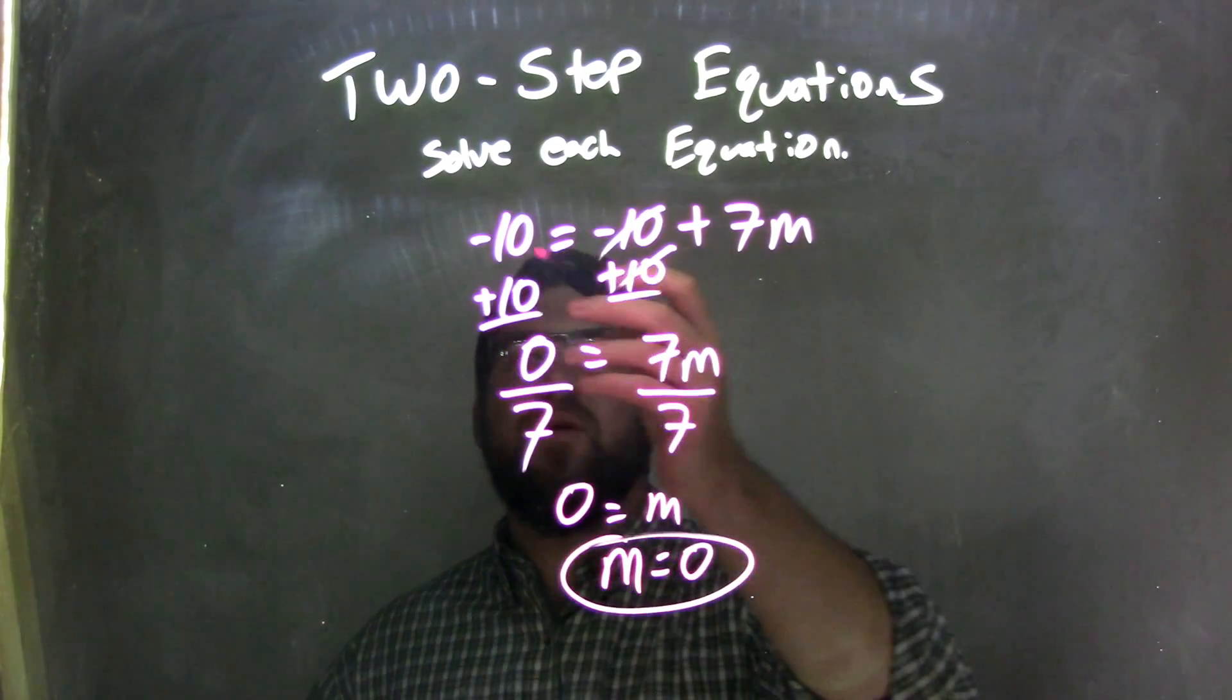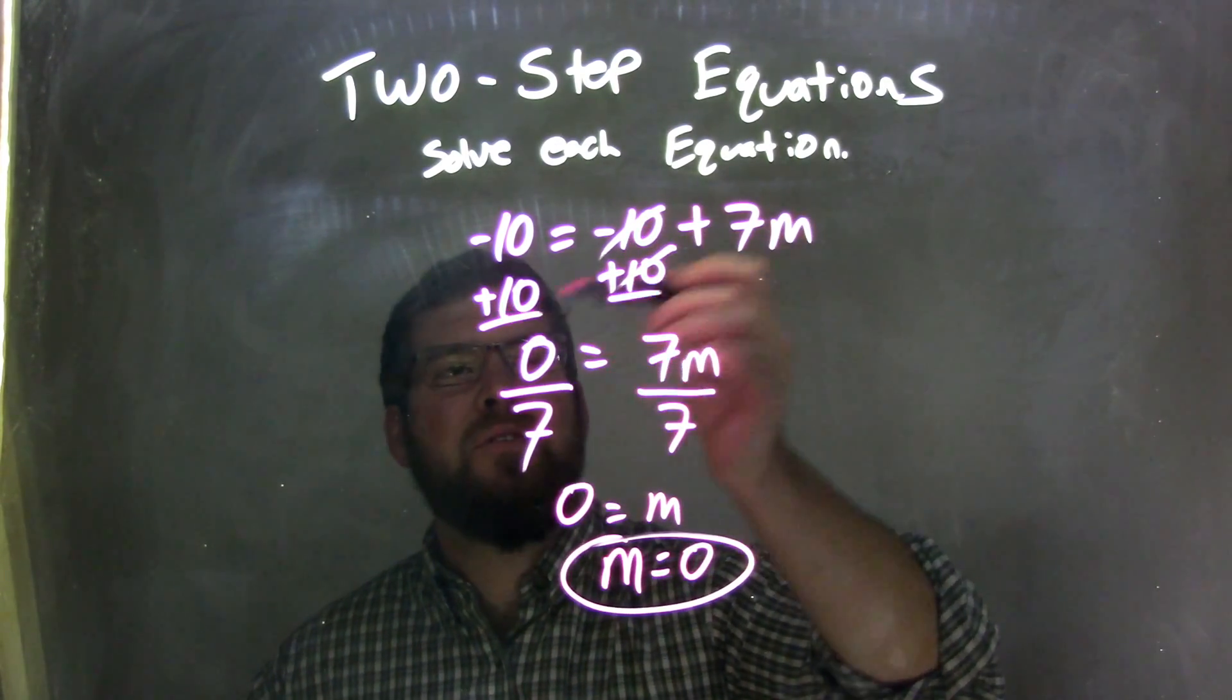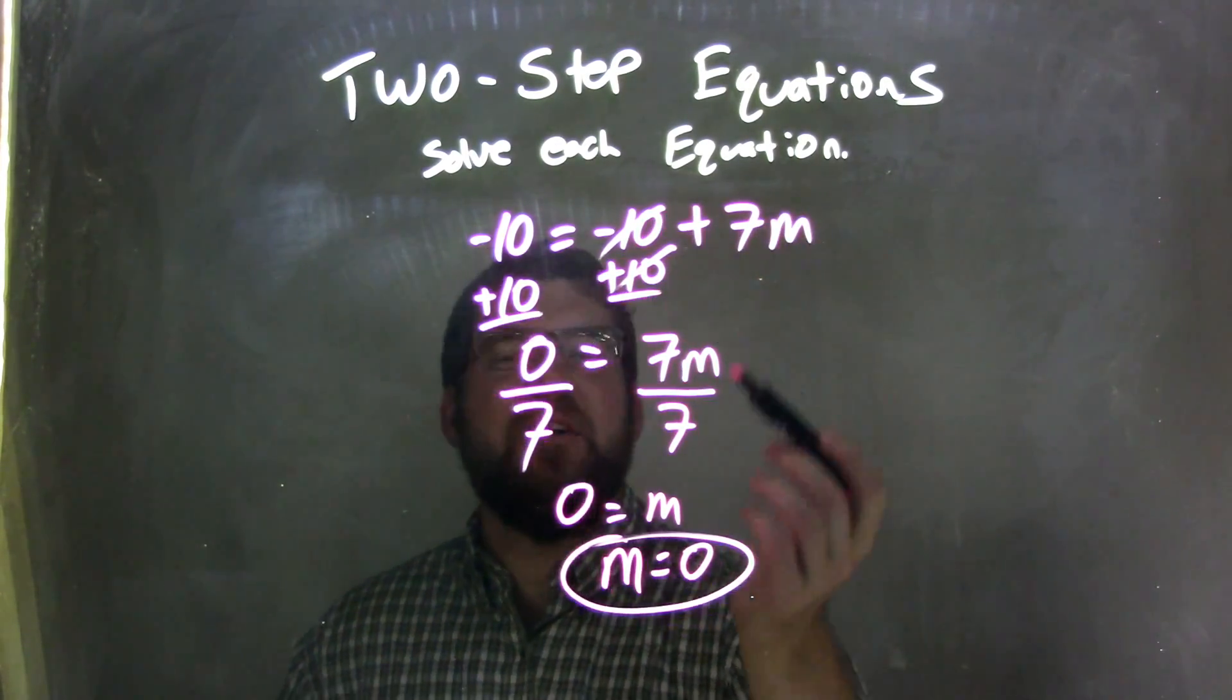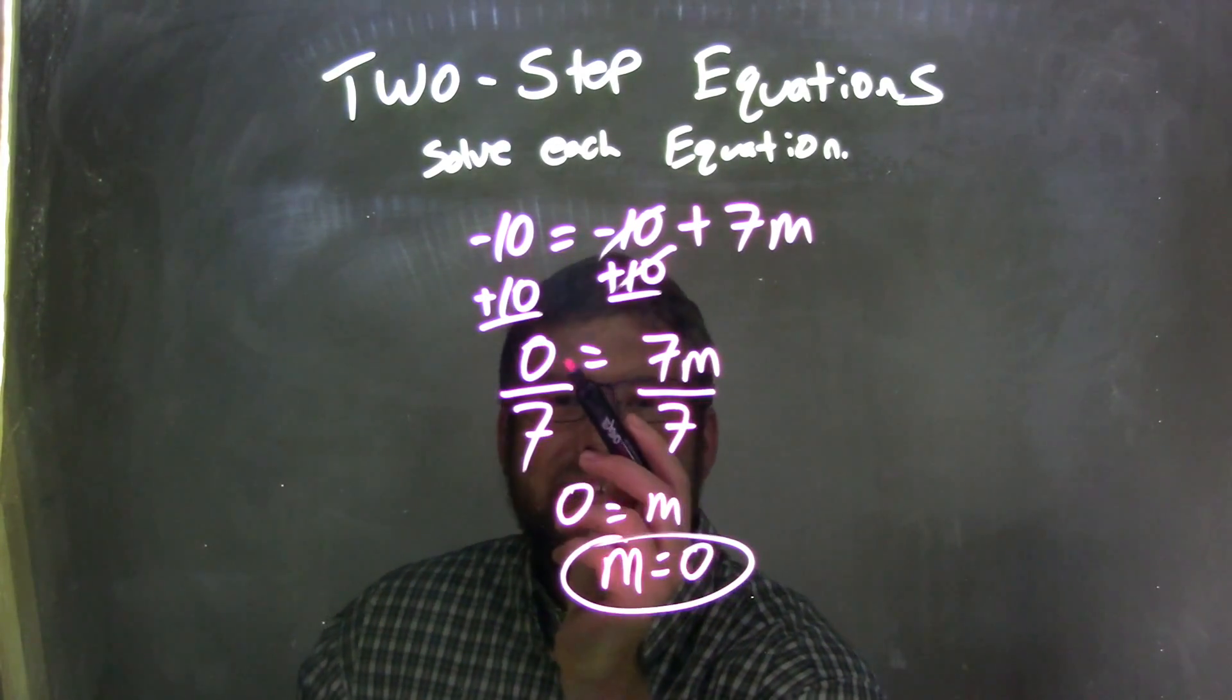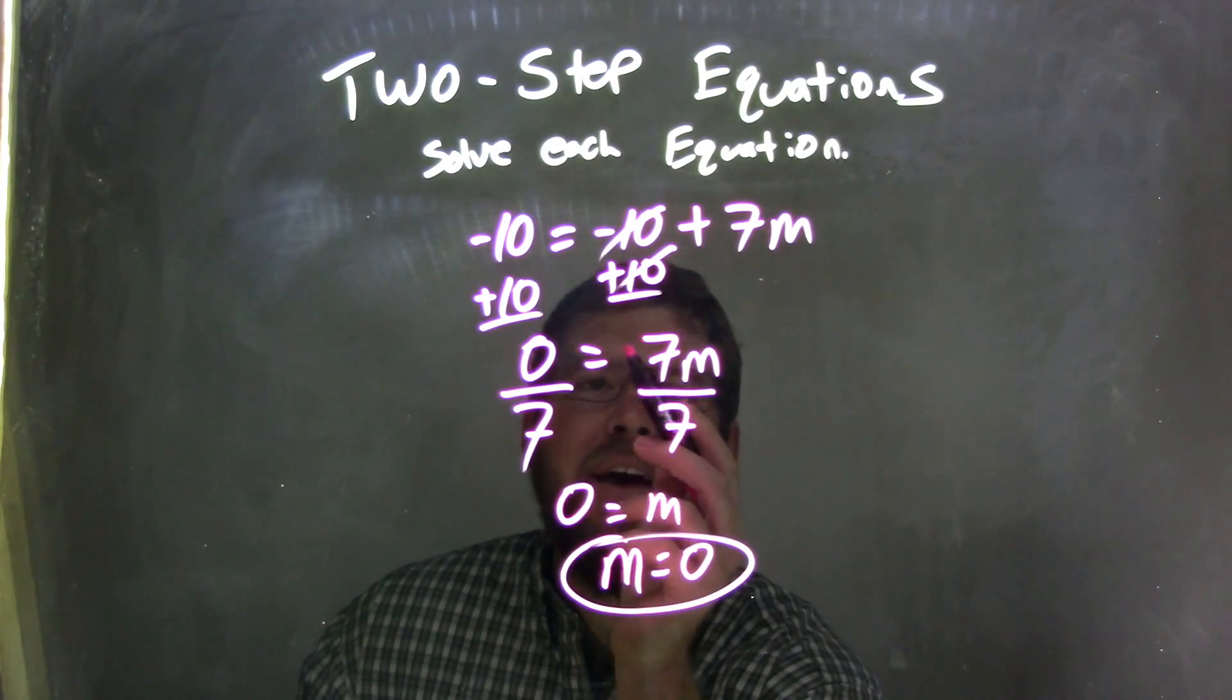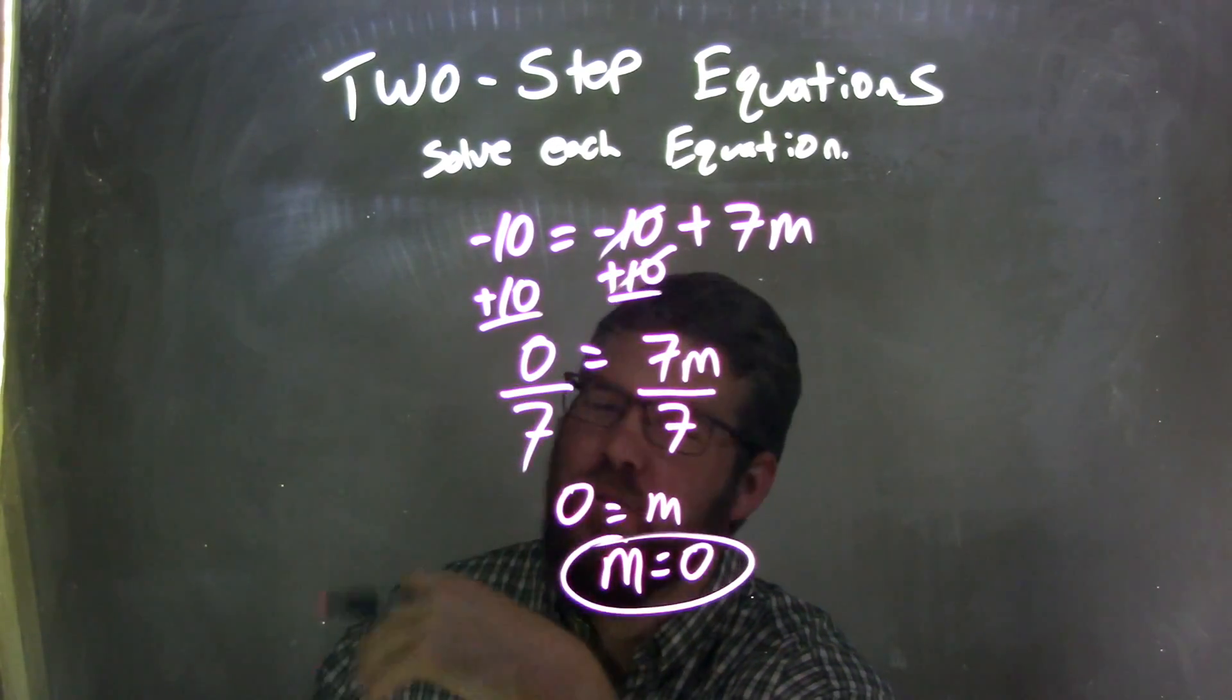So let's recap. We started with negative 10 equals negative 10 plus 7m. I added 10 to both sides to cancel the 10s from the right. It turns out I ended up canceling the 10s from the left, leaving me that 0. But I write this 0 here, and it's the only one left. Here I have 0 plus 7m, and I know that doesn't change anything, so I didn't write it.